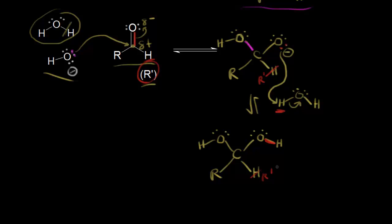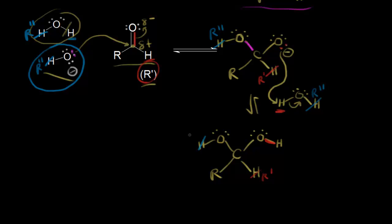If we want to form a hemiacetal, we would not start with water — we would start with an alcohol, R''OH. If we use a base, we take off the proton on our alcohol to form an alkoxide. An alkoxide anion is more nucleophilic than alcohol by itself, so the alkoxide attacks. Instead of a hydrogen in the intermediate, we now have R''. In the protonation step, instead of water we use our alcohol, with R''. Finally, for our hemiacetal product, instead of hydrogen we have R'' — we have now formed a hemiacetal.